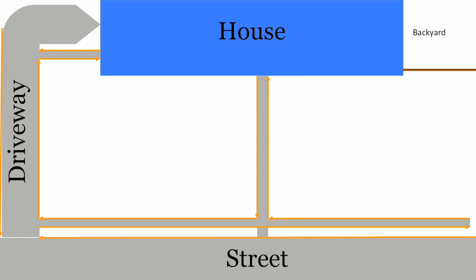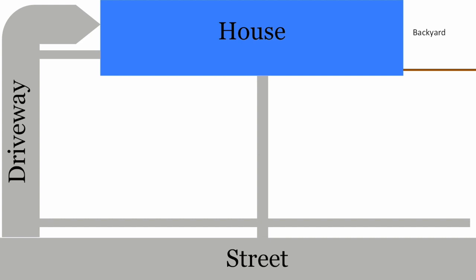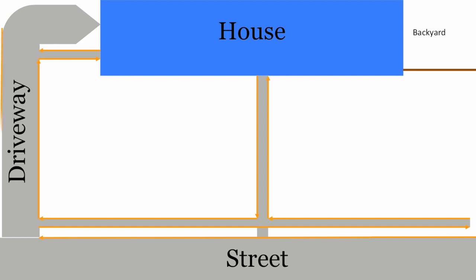Even if this were my job and I got paid by the yard, I'd still want to edge as efficiently as possible. So my method is: I look at my layout and try to come up with the best way to minimize any overlap and any walking time where I'm not edging. This is the first time I've ever been able to come up with a method to not backtrack at all — I think I got lucky on the layout of my neighbor's yard.